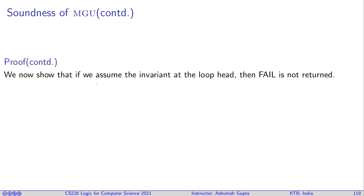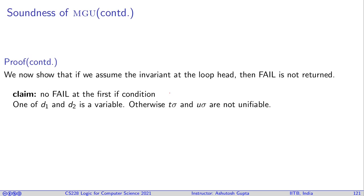Now we show that if we assume the invariant at the loop head, then fail is not returned. It cannot be possible that fail is written. There are two fails, right? No fail at the first if condition. When does that happen? When both of them are non-variable. If both disagreement pairs are non-variable, then t sigma and u sigma are not unifiable. But we have shown that they are unifiable. Therefore it cannot be the case, and one of them must be a variable. Therefore that cannot happen.